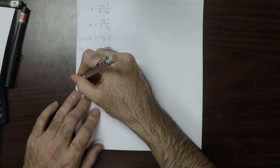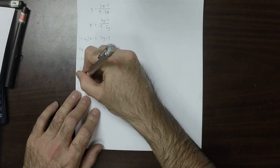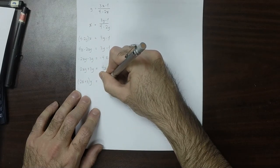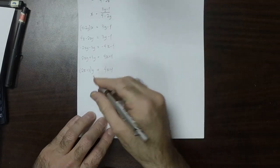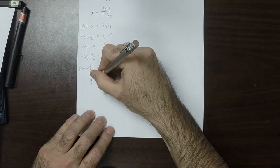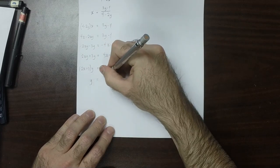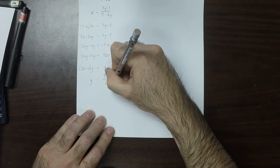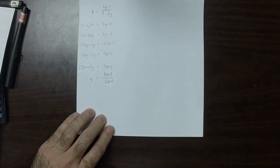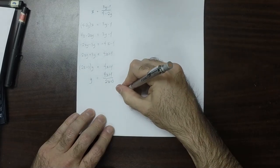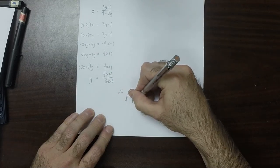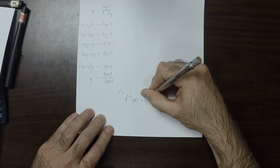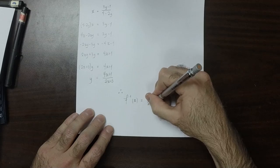I'll factor out the common y. So (2x plus 3) times y equals 4x plus 1. And then I can divide by 2x plus 3 to obtain the inverse function: (4x plus 1) divided by (2x plus 3).